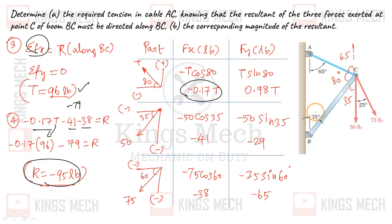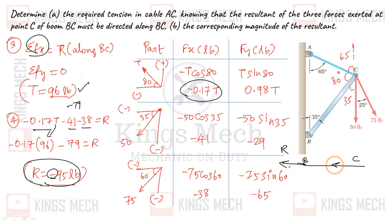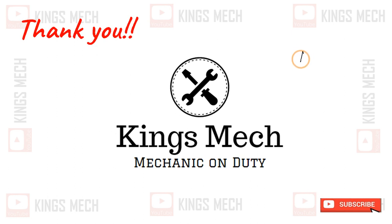So the resultant is along — looking at the point, the resultant is along the beam. Our result is R, which is equal to minus 95 pounds, meaning it is in the negative direction along the x-axis.